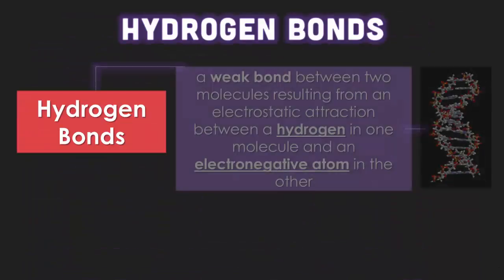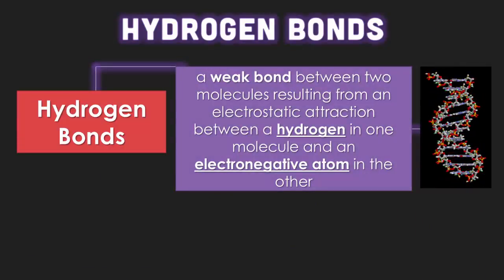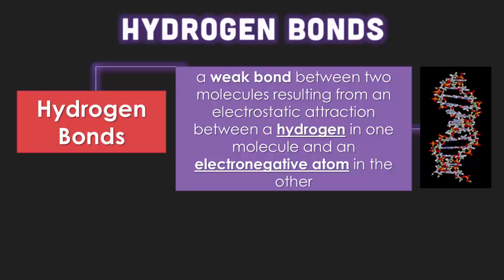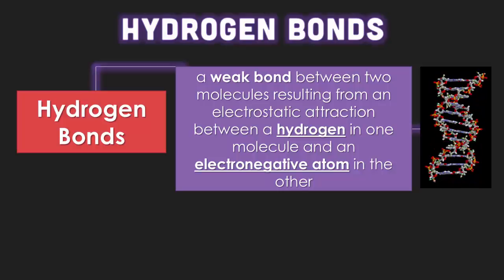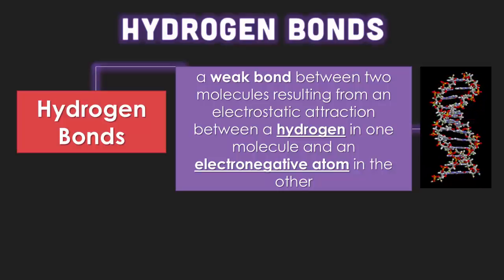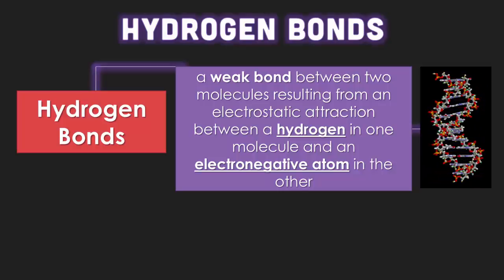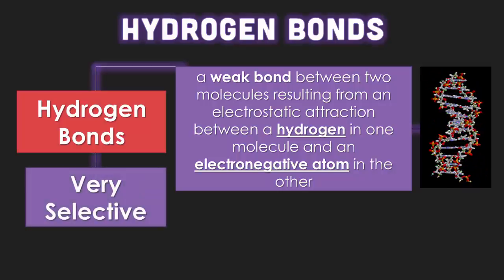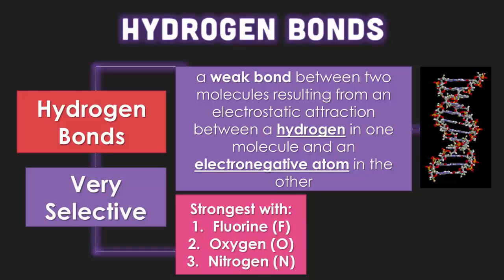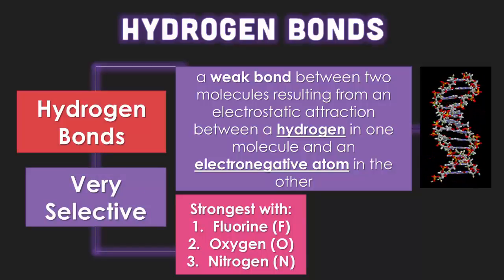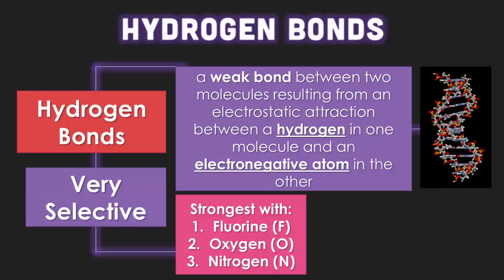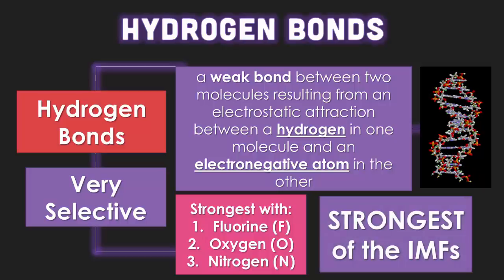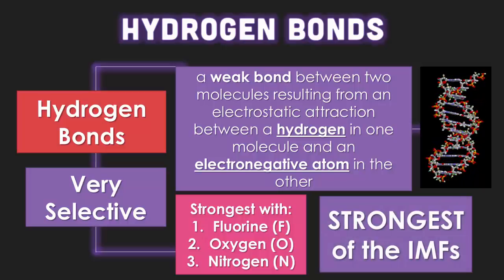Hydrogen bonding is actually the strongest of all intermolecular forces. It is a weak bond between two molecules resulting from an electrostatic attraction between a hydrogen in one molecule and an electronegative atom in the other. It's very selective — hydrogen bonds can only be created when hydrogen binds with the strongest electronegative elements: fluorine, oxygen, and nitrogen. These are the strongest intermolecular forces.